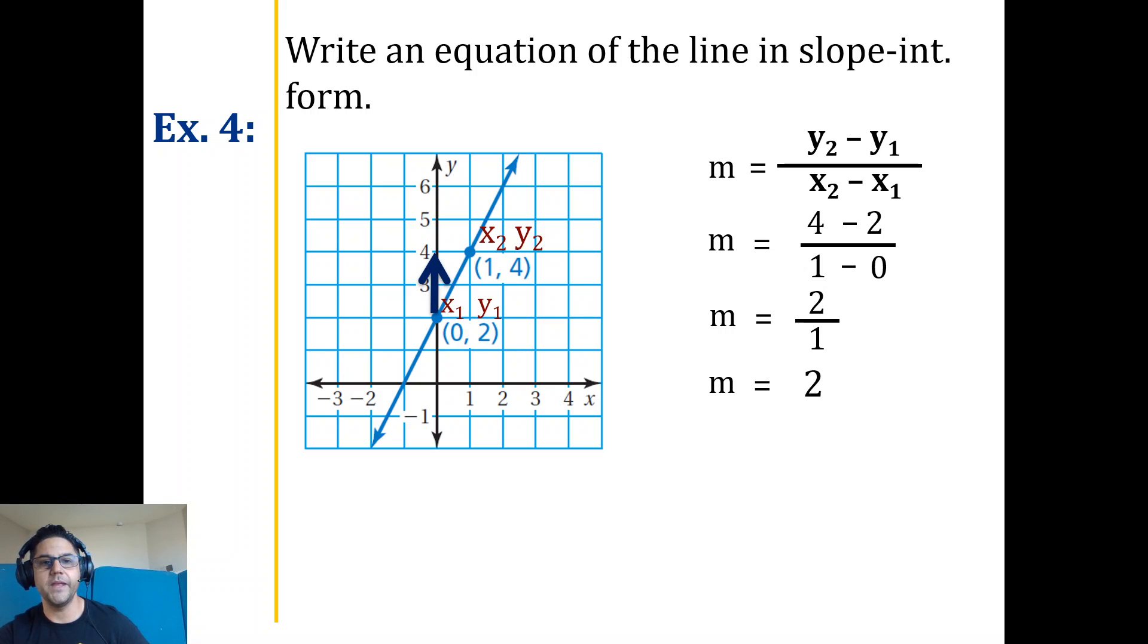Y-intercept, again, is where the line touches the y-axis, but got the nice picture form there. Rise 2, run 1, 2 over 1, which is 2. Y-intercept, again, where the line touches the y-axis, 0, 2. So quick substitution, y equals 2x plus 2.